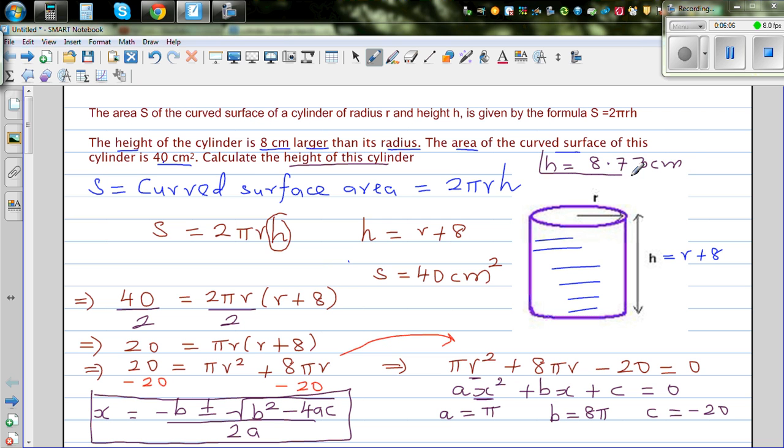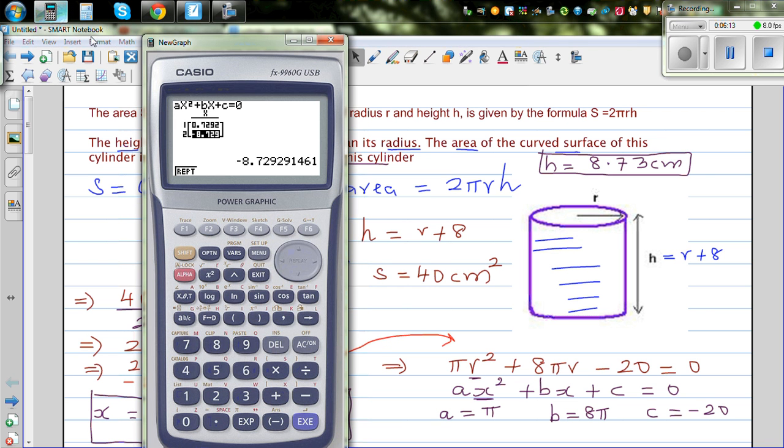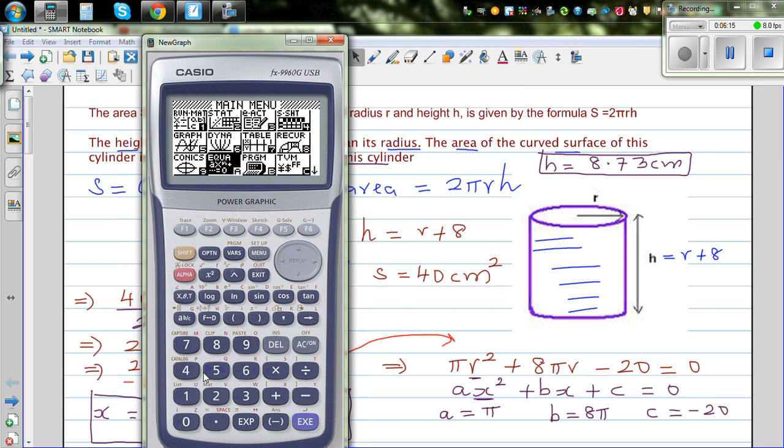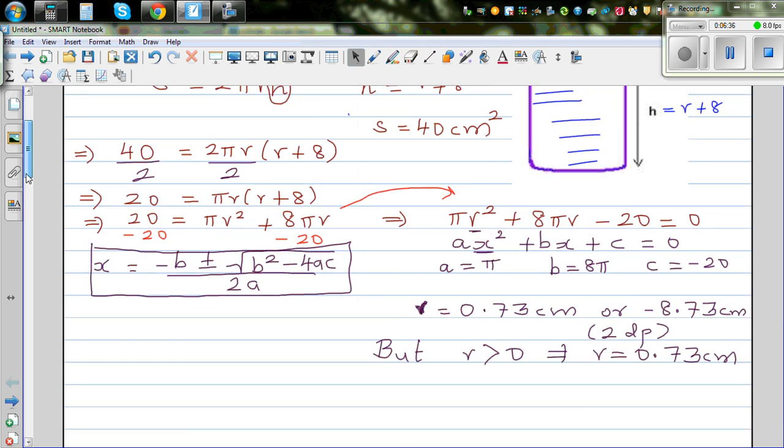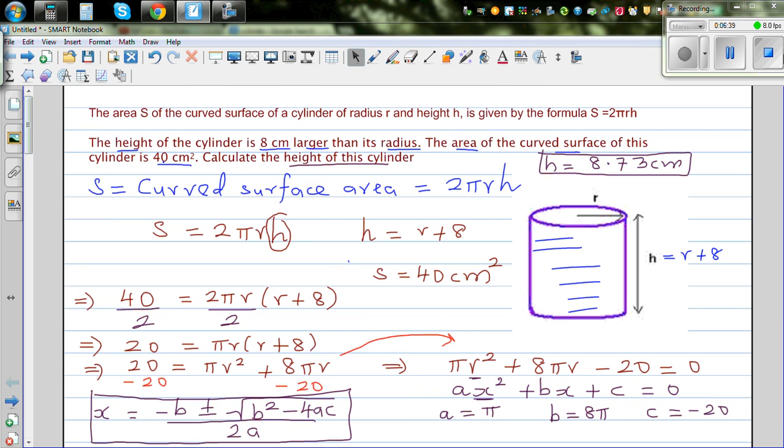Now just to check your answer, let's check, because this is rounding so you may not get exactly 40. Let's go to run. 2 shift π times r, which is 0.73, times 8.73. So this would be around 40. So this is a good estimation. If you had put the exact answer, you will exactly get 40.